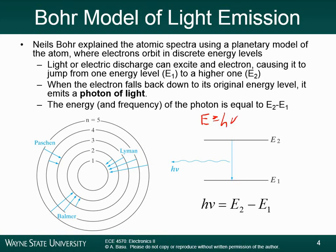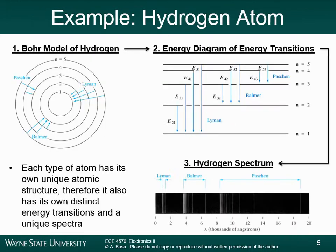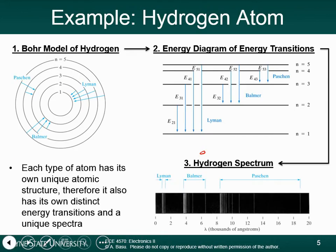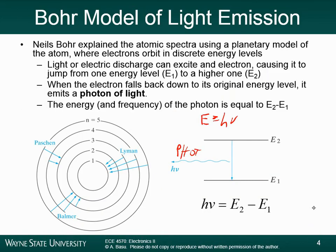This is Planck's law: E equals hν. A photon is a discrete packet of electromagnetic energy — a packet of light, basically. The energy that the electron gives off is emitted as a photon.